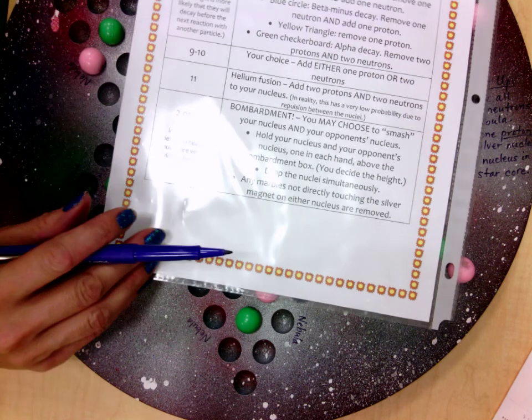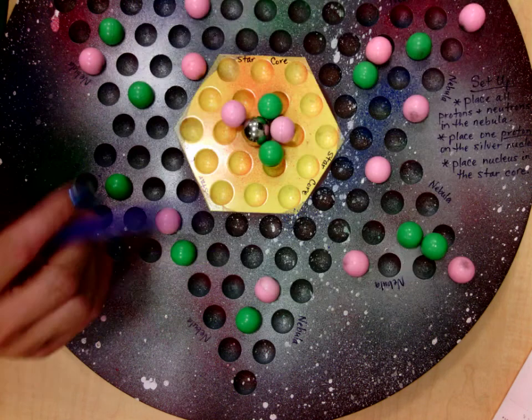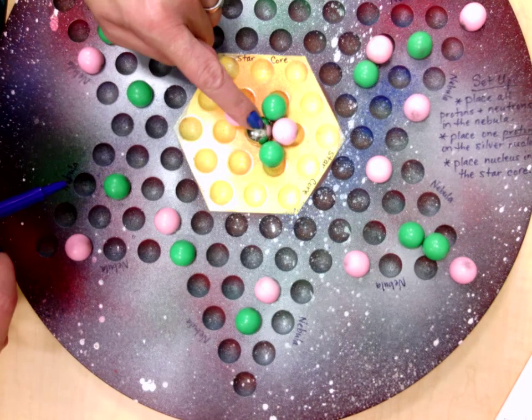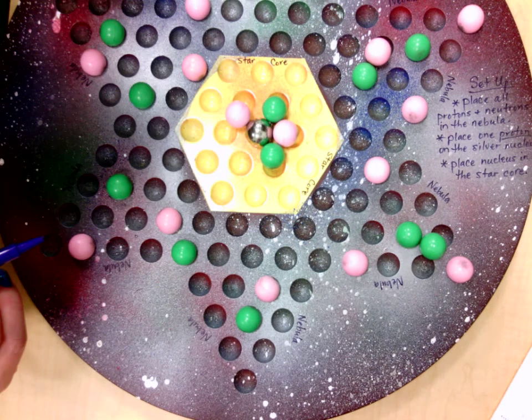Pretty much things are going to explode and go all over inside the box. Whatever sticks to the silver steely, you get to keep. Whatever falls off goes back into your nebula area on your game board.